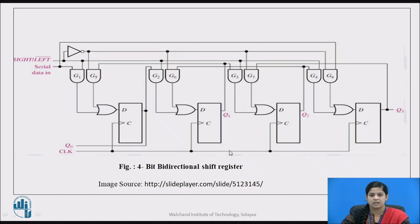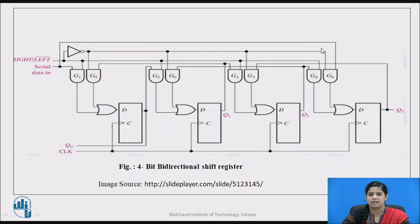As it is a synchronous circuit, a common clock is given to each and every flip-flop. The flip-flops are called D0, D1, D2, and D3, and the corresponding outputs are Q0, Q1, Q2, and Q3. There are two input lines. First is the serial data input, which is connected to gate G1 as well as gate G8. The second input line is right-left bar, also called the mode signal. It allows the circuit to work as either shift left or shift right operation.